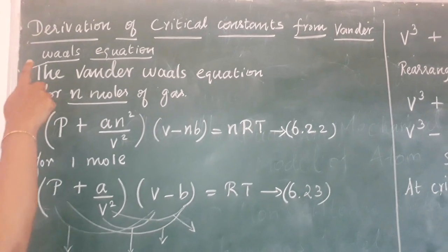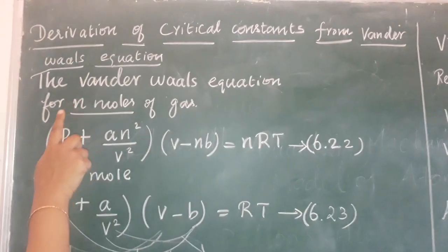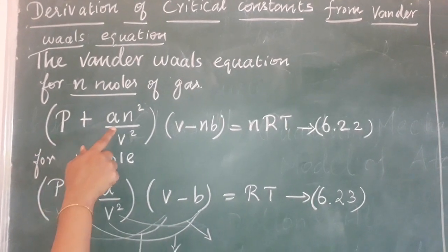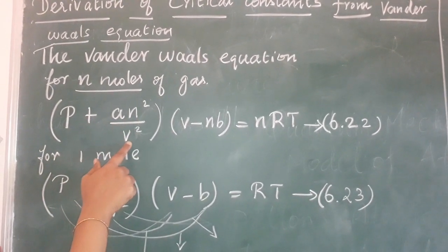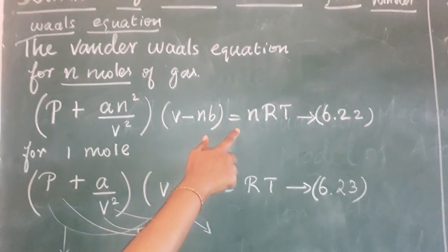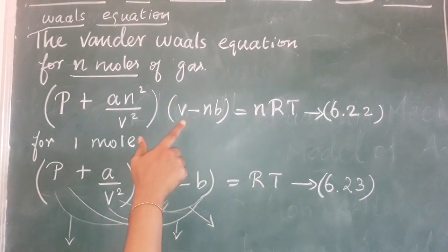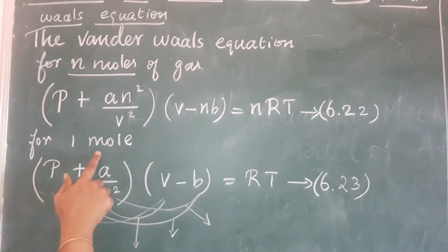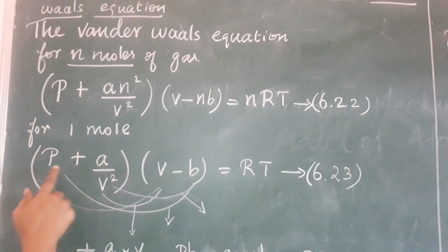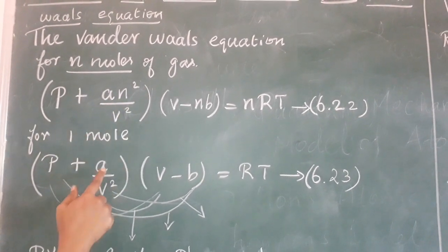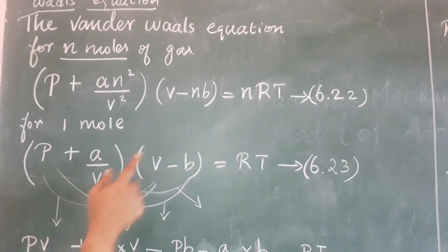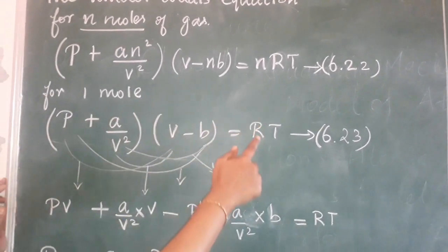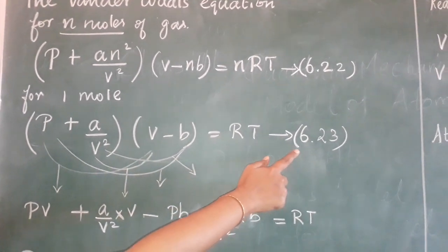Now we are going to see the derivation of critical constants from Van der Waals equation. We already know the Van der Waals equation for N moles: (P + AN²/V²)(V - NB) = NRT. This equation is for N moles of gas. For one mole, put N = 1, so we get (P + A/V²)(V - B) = RT — this becomes equation 6.23.